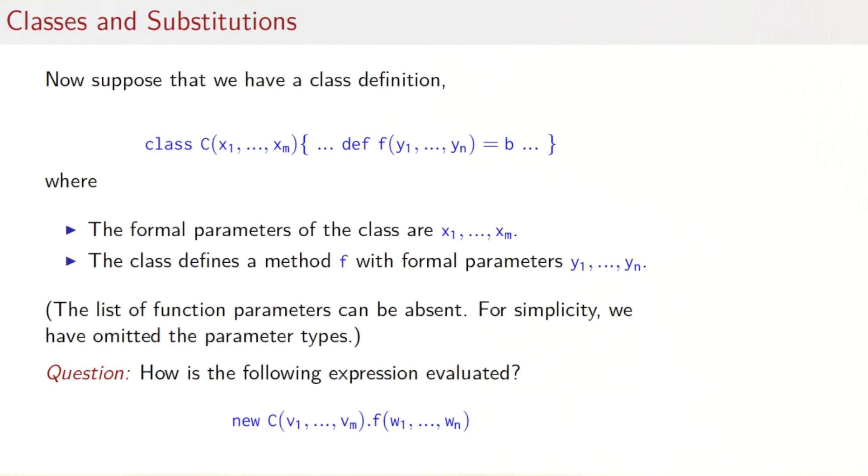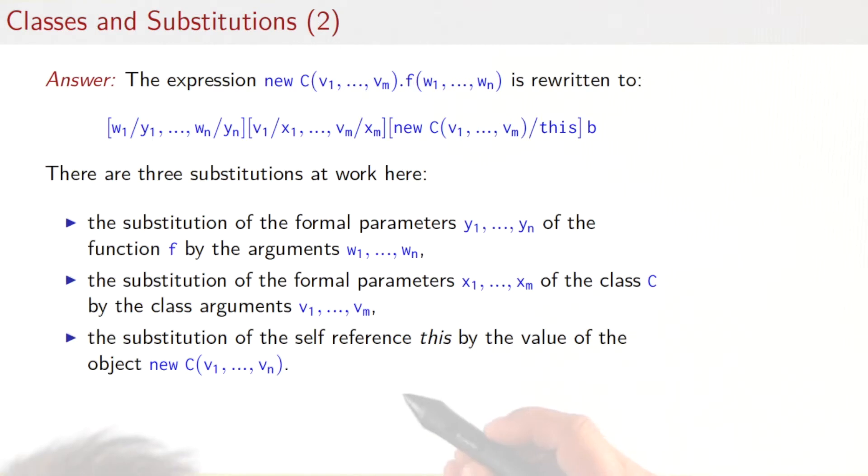Next question. Let's suppose we have a class definition like the one you see here, where we have a class C with a method f, and the formal parameters of the class are named x1 to xm, and the method f has parameters y1 to yn. For simplicity, we have omitted any parameter types. Now, the central question is, if we have an expression where we have a class instance new C of v1 to vm, then we call the method f and pass it further argument values w1 to wn, how is that evaluated? Let's see how we would answer these questions.